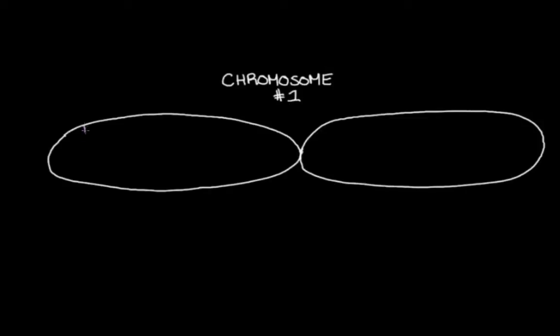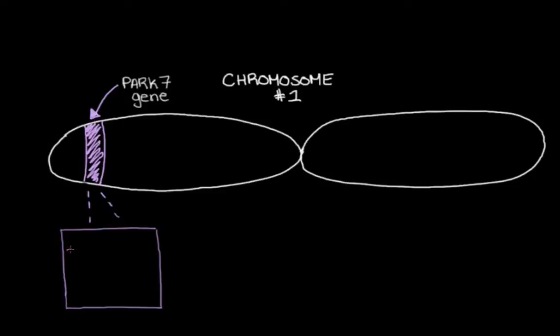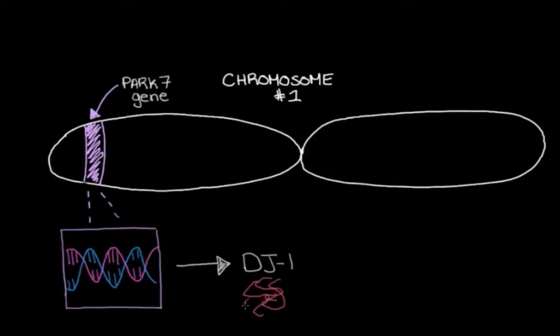So let's head over here to our first chromosome, chromosome number one. And right about here, we have a gene called PARK7. And PARK7 has instructions for making a protein called DJ1. And DJ1 kind of makes me think of a mom. When I think about what DJ1 does, I think of a mom.